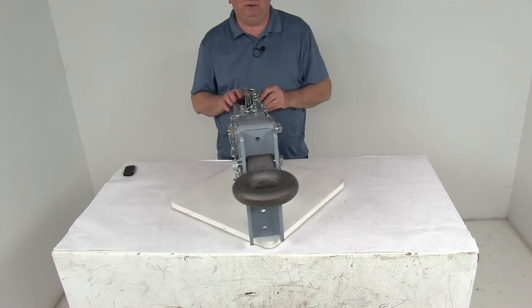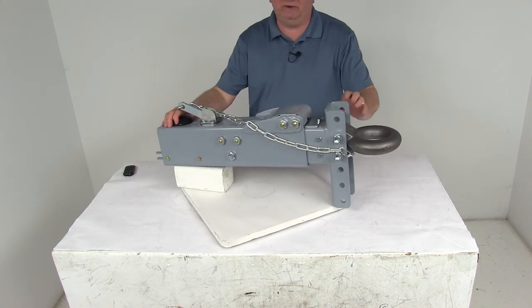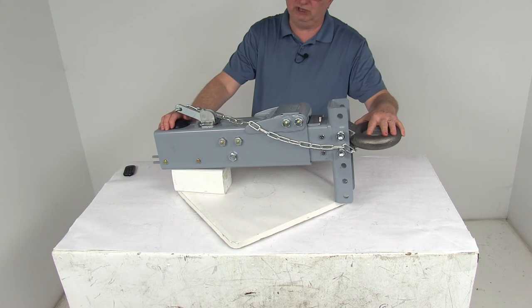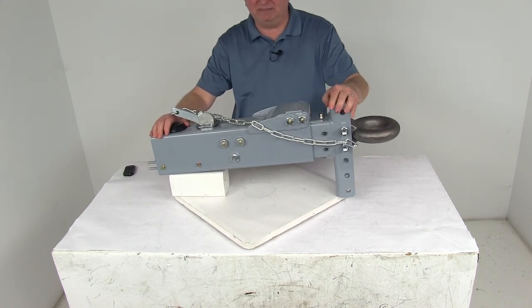But that should do it for the review on the Titan drum brake actuator with the 5 position adjustable channel and the 3 inch lunette ring with a 20,000 pound weight capacity.